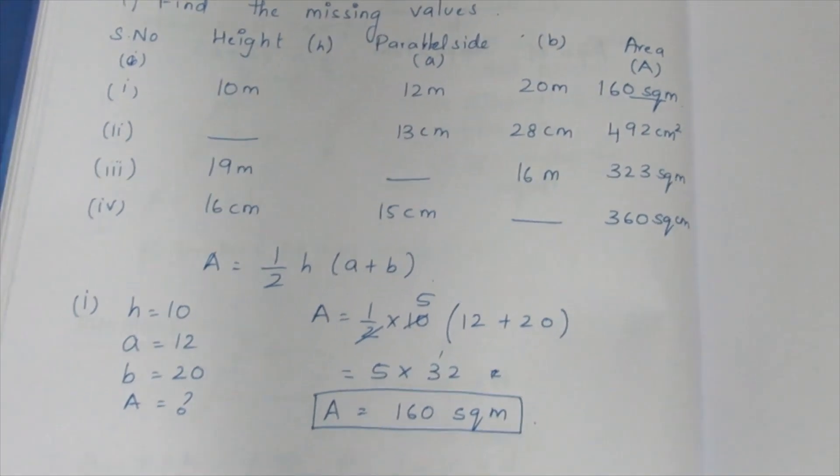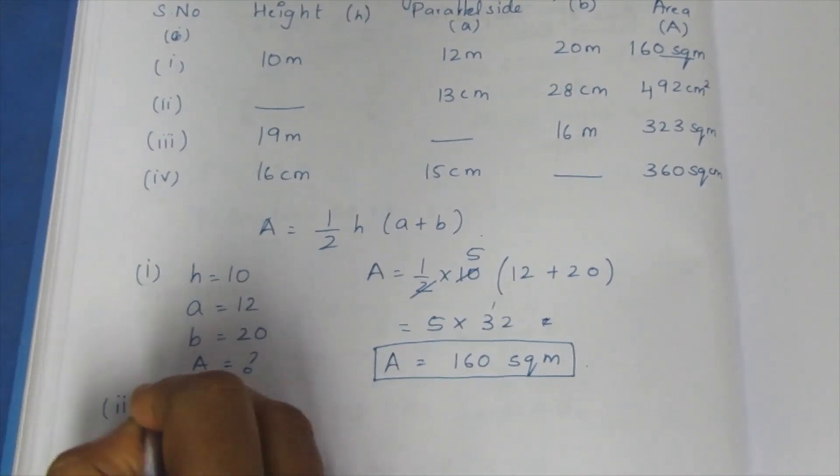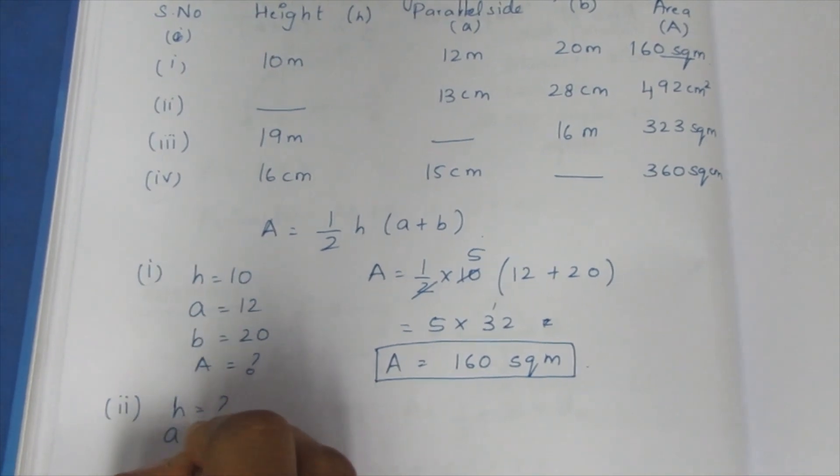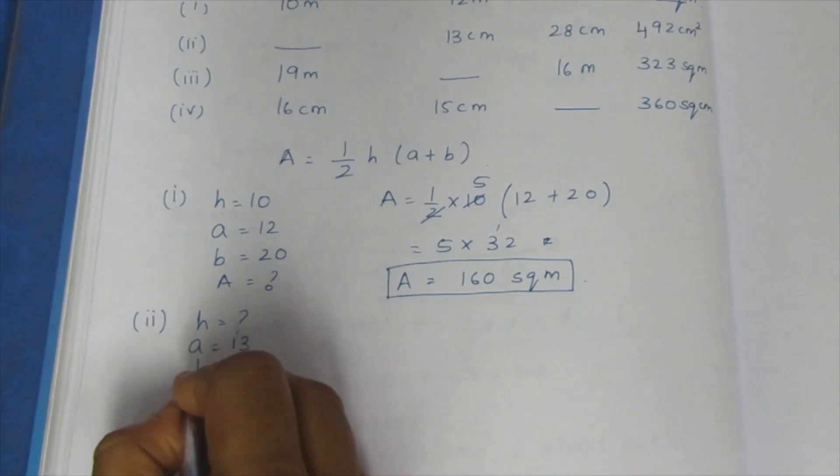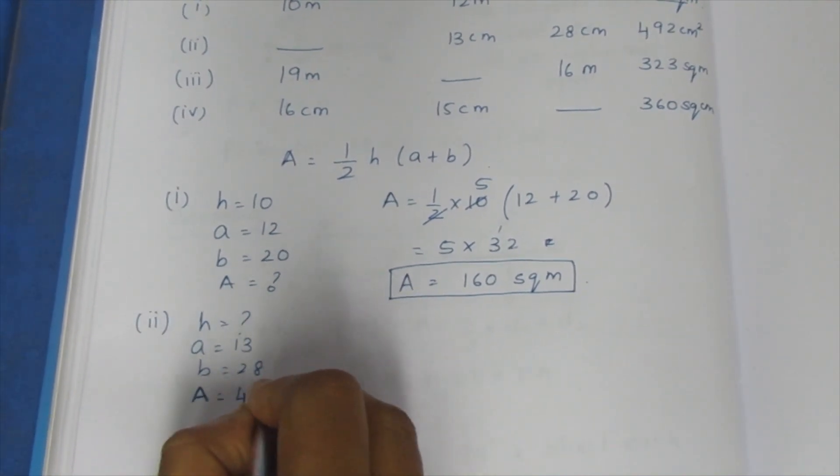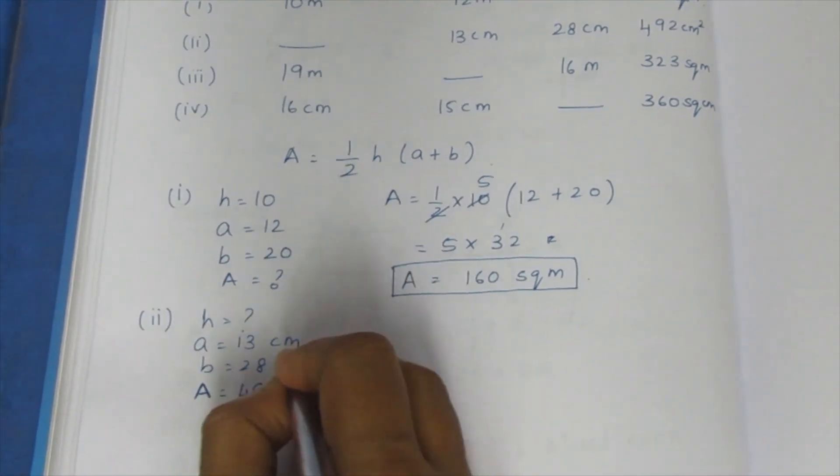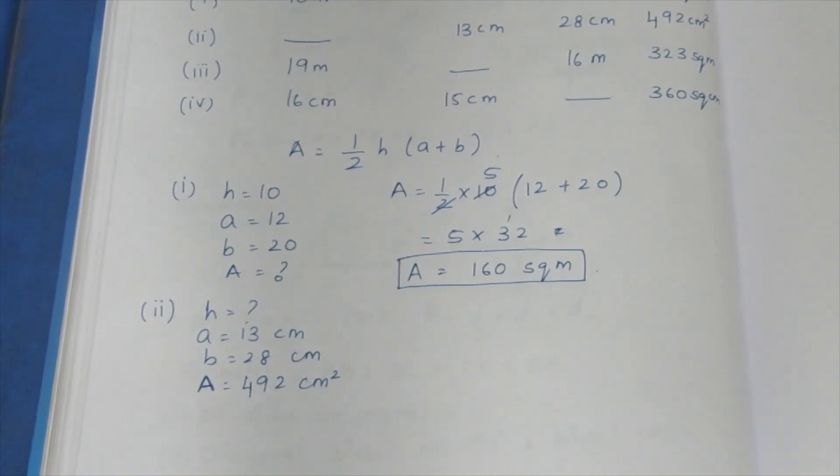Now we will do the second sum. Second sum: H is not available, A is 13, B is 28, area is 492. It is centimeter, centimeter and centimeter square. What is the formula? Area is the first formula.